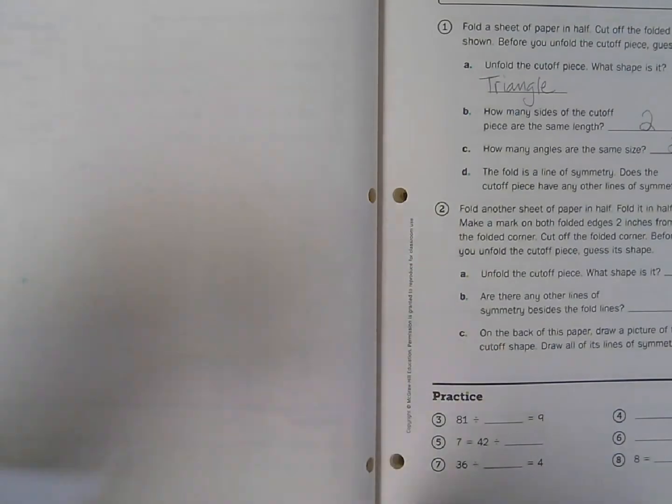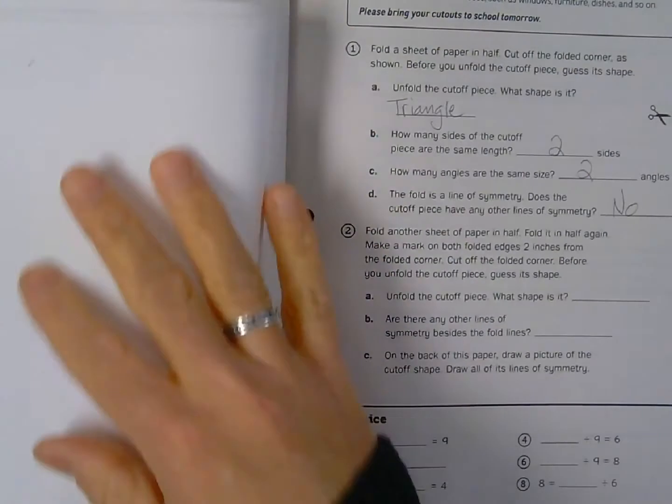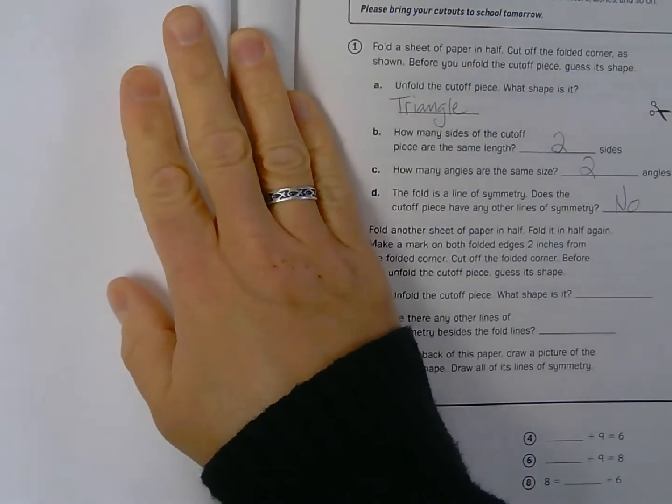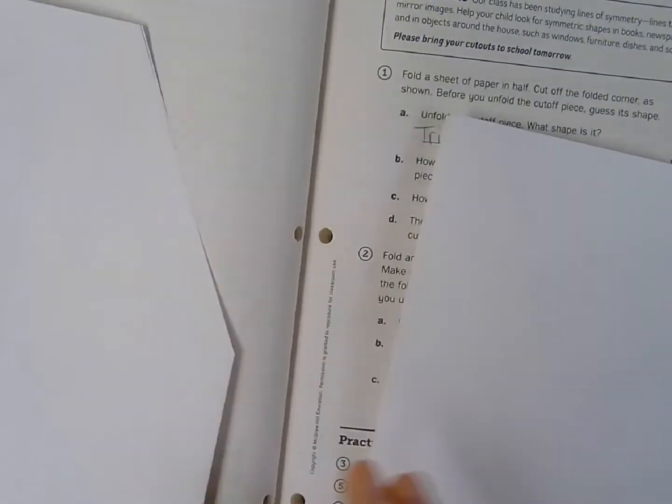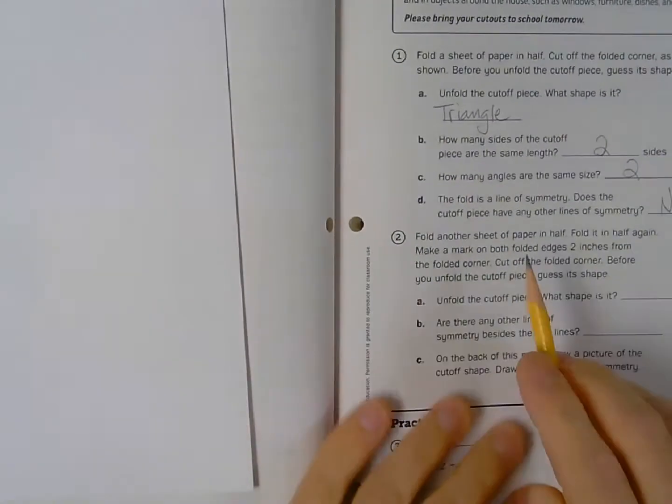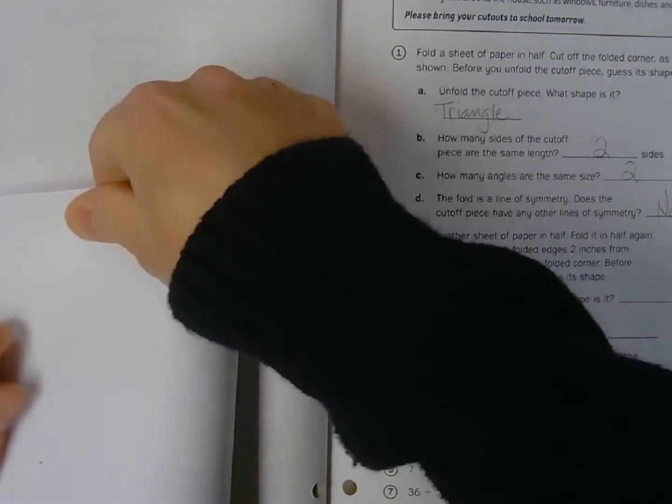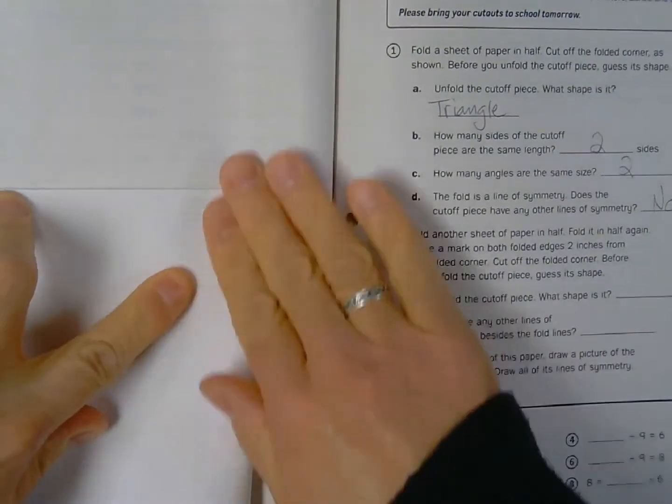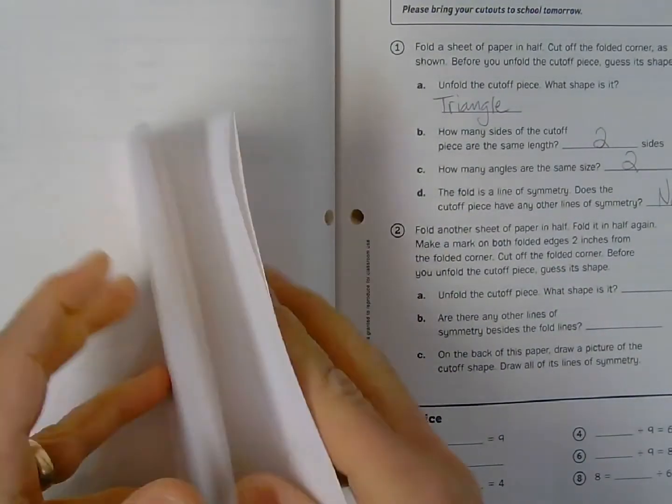I'm going to get you started on question number two, and then I'm going to have you do the rest of the questions here. So again, I'm going to start with paper, and I'm going to fold it in half, but this time I'm going to be a little bit more deliberate with my cutting. With this one, I just kind of cut a diagonal, I kind of eyeball it. This one here, you got to follow the instructions a little bit closer. It says, fold another sheet of paper in half, fold it in half again, like so. So now I've got four sections, because I folded it twice. So if I unfold it for a moment, you can see that I have four parts. I'm going to fold it back together.